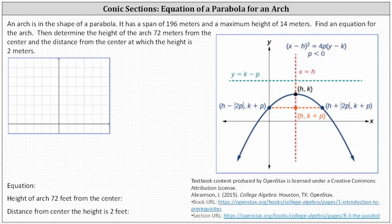An arch is in the shape of a parabola. It has a span of 196 meters and a maximum height of 14 meters. We're asked to find an equation for the arch, then determine the height of the arch 72 meters from the center, and the distance from the center at which the height is two meters.